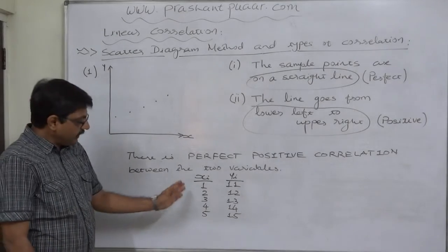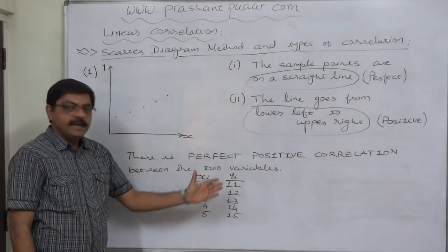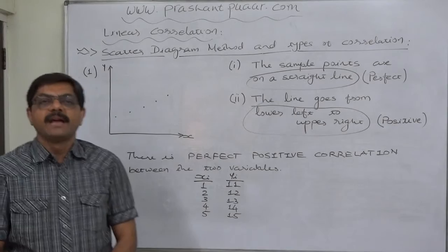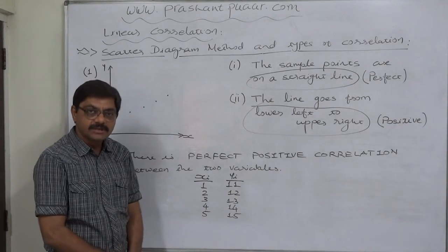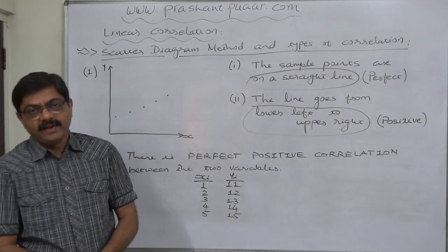The example of the values of the variables, there will be change in all values in same direction. If all the values change in same direction, there can be perfect relationship.